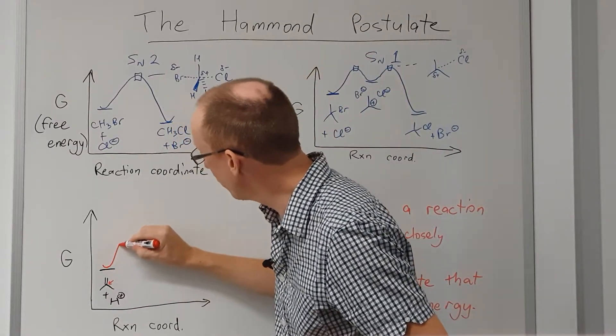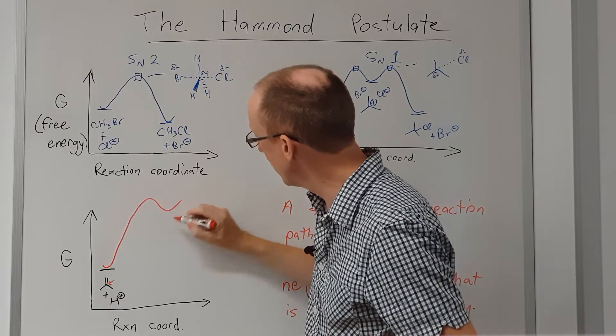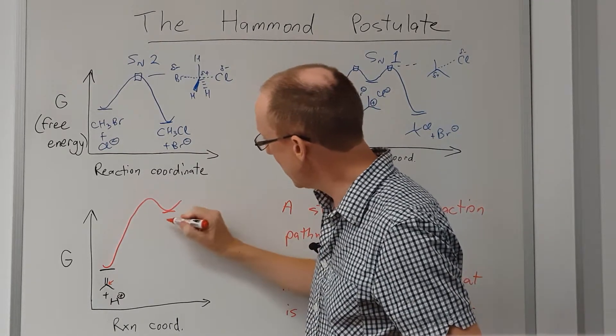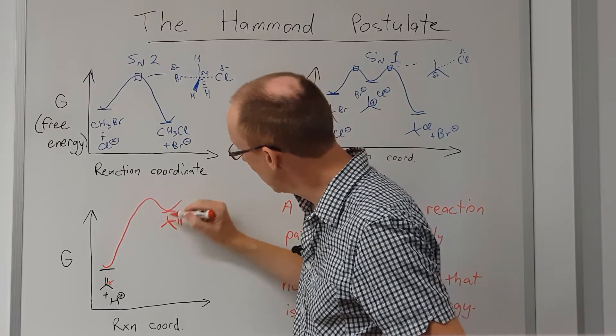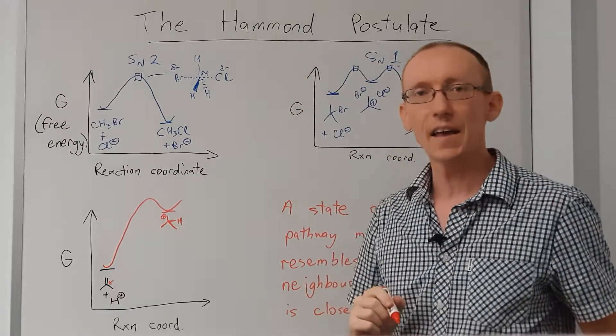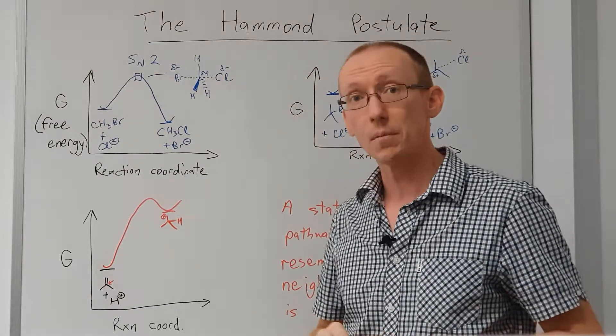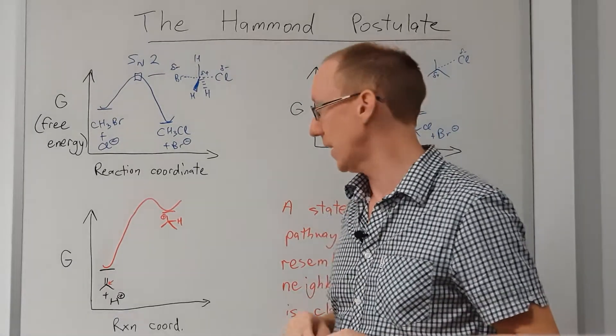We'll go up through a transition state and down to an intermediate, and that intermediate is going to have a structure where we have that proton there and the positive charge is going to be located at the terminal group, so it's a primary carbocation. We know the primary carbocation is a very high energy species.